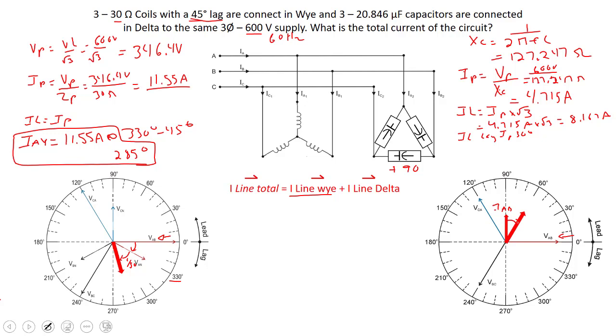So if I come back 30 degrees from my phase current, that puts us at 60 degrees. So IA of the delta is equal to 8.167 amps line current A at 60 degrees.